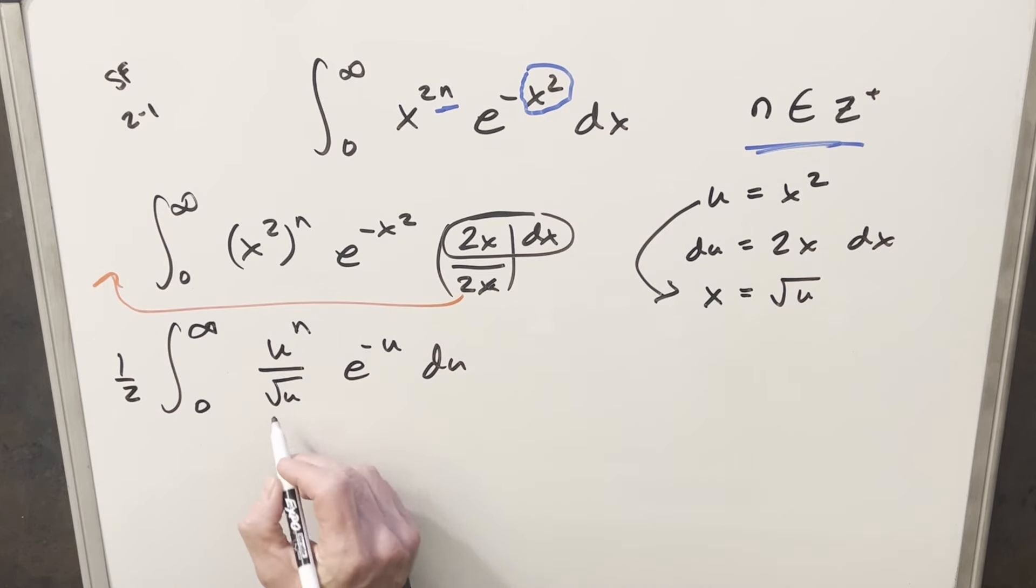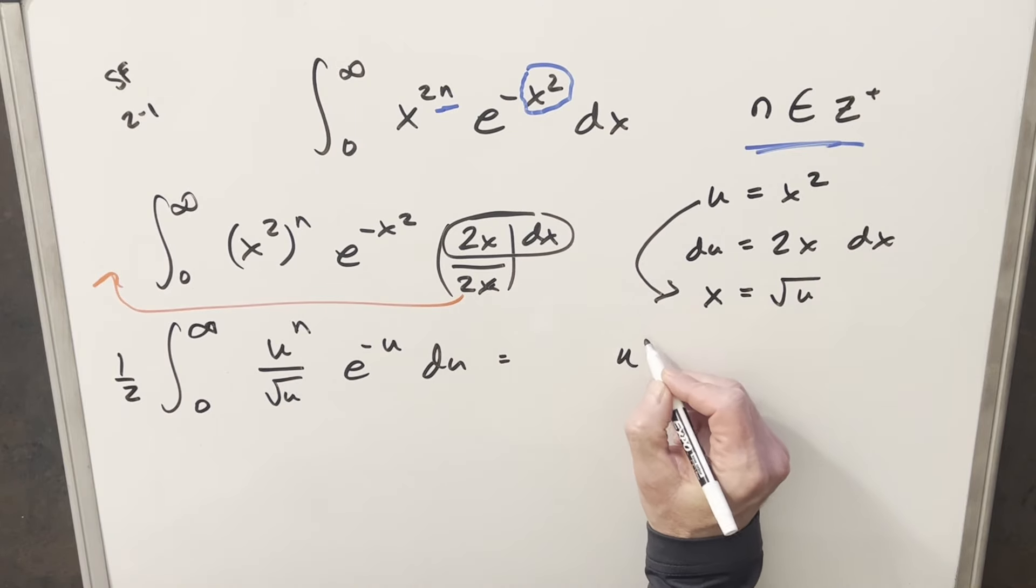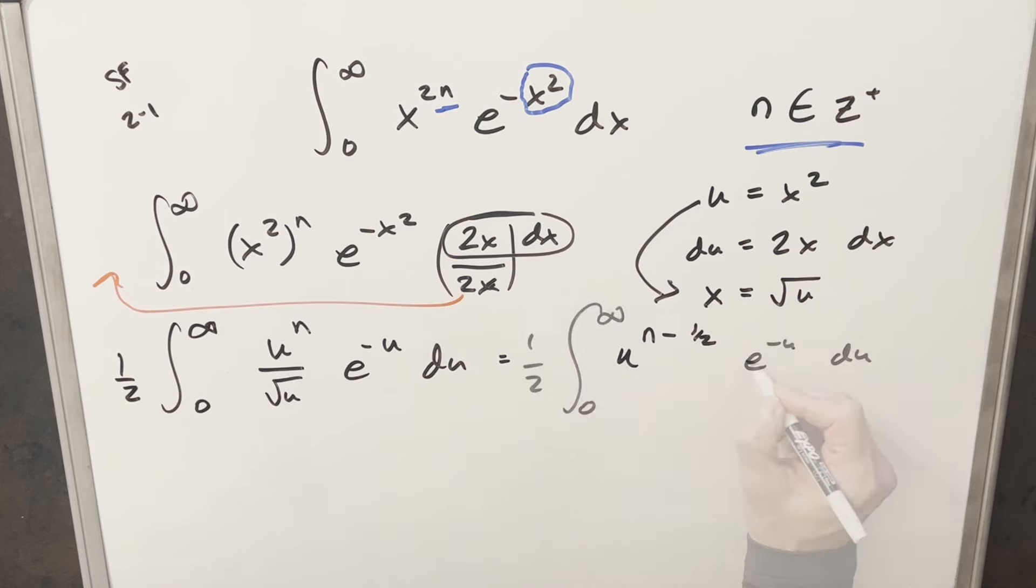And so that takes care of that x squared. Now here, because we have the same base, we have u in both these. When I rewrite this, I can actually write this as u to the n minus 1 half. But by doing that, now we have this whole thing right here. This integral is in the form of the gamma function.